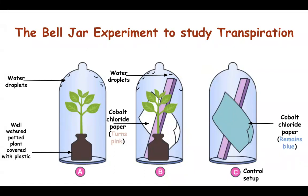The first Beljar experiment involves three different Beljars: Beljar A, B, and C. In Beljar A and B, we take a potted plant which is well watered and the pot and the soil is covered with plastic. In Beljar B and C, we take cobalt chloride paper. Cobalt chloride paper is an indicator for water vapor — it is blue when dry but turns pink when it absorbs moisture.